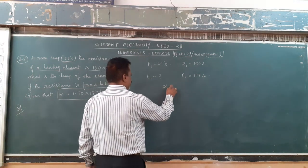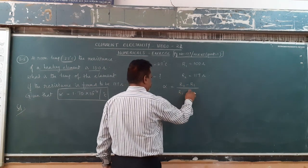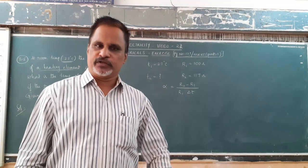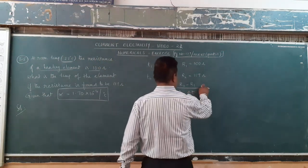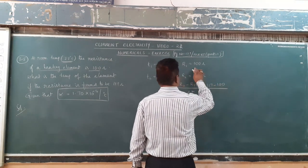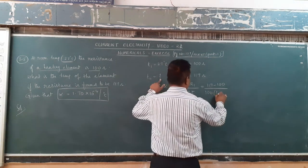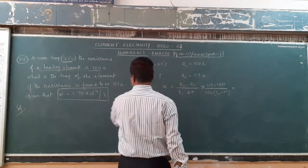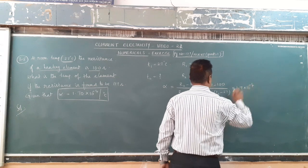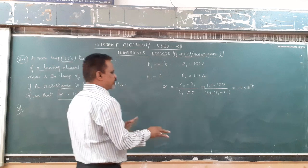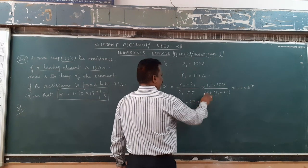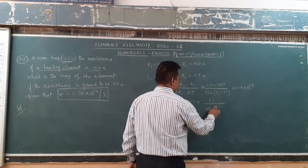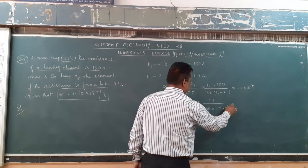The formula for alpha is: alpha = (R2 − R1) / (R1 × ΔT). Just use this formula. R2 − R1 = 117 − 100 = 17. The value of alpha is 1.7 × 10⁻⁴. So ΔT = 17 / (100 × 1.7 × 10⁻⁴). This gives T2 − 27 = 17 / (1.7 × 10⁻²) = 1000.